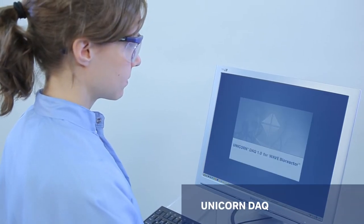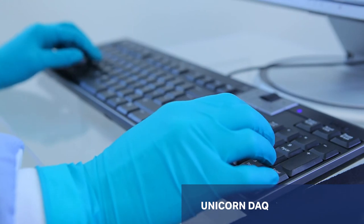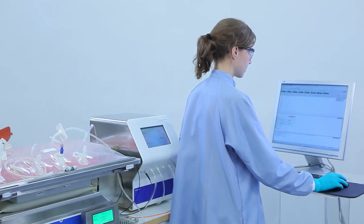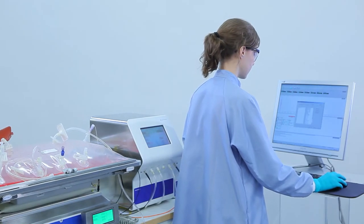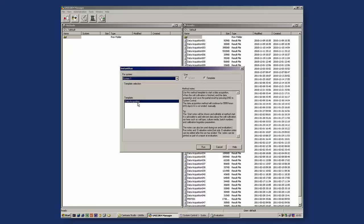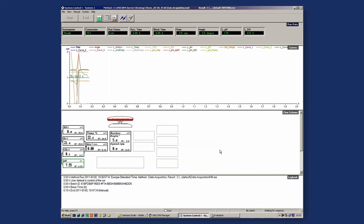Unicorn DAC software enables real-time data acquisition, monitoring, and storing of result data from a cell culture run. The software can collect data from up to four wave bioreactor systems simultaneously. To start the data acquisition, click the Run button, enter run information, and name the result file. Click the Start button. Unicorn DAC starts monitoring the data from the current cell cultivation run.